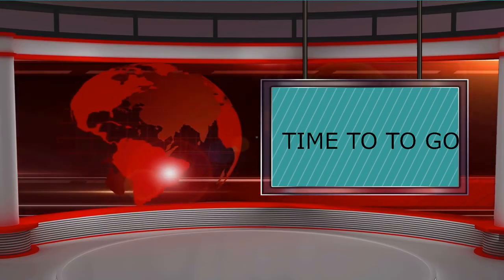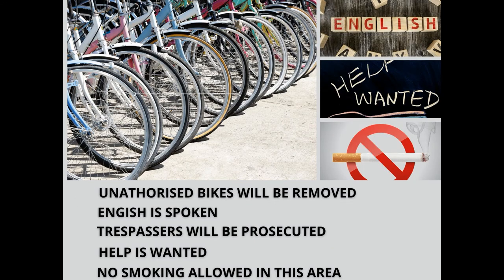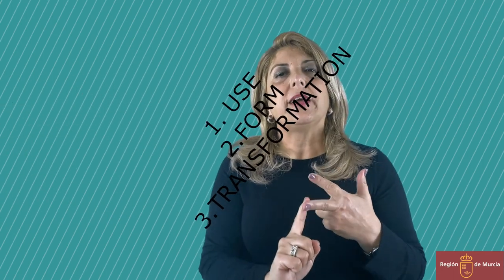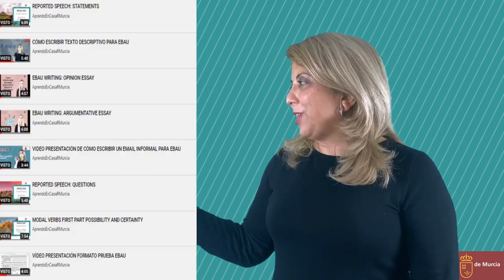It's time to go. I hope you find this video useful. As you can guess after watching it, the passive voice is quite common in English, and you will see it in many signs such as these: 'Unauthorized bikes will be removed,' 'English is spoken,' 'Trespassers will be prosecuted,' 'Help is wanted,' and 'No smoking in this area.' If you review the video, you can see that we have analyzed three aspects of this structure: first, the uses; secondly, the form; and lastly, transformation from active into passive. There will be two more videos to help you get off the hook with the passive voice. Keep posted with our videos — Aprendo en casa!